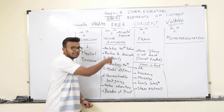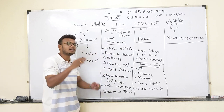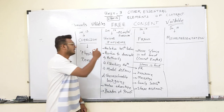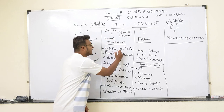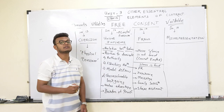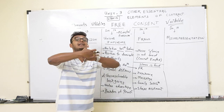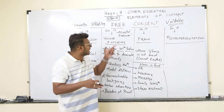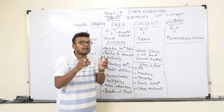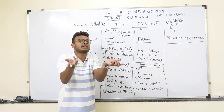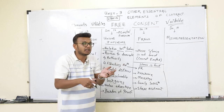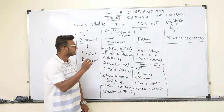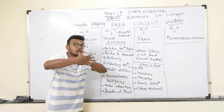The essentials of undue influence: first, relations between the parties — the parties must be close, connected to each other. If they are not in a close relation, you cannot claim mental pressure. So the first ingredient of undue influence is that the relation between parties must be very close.